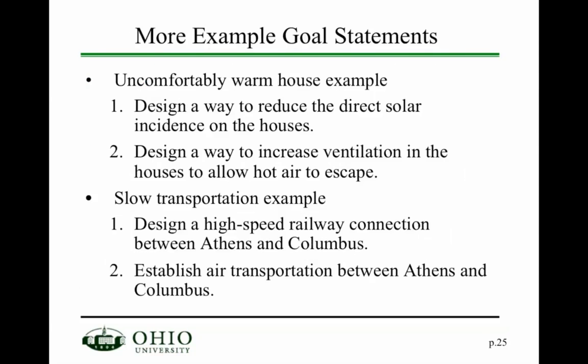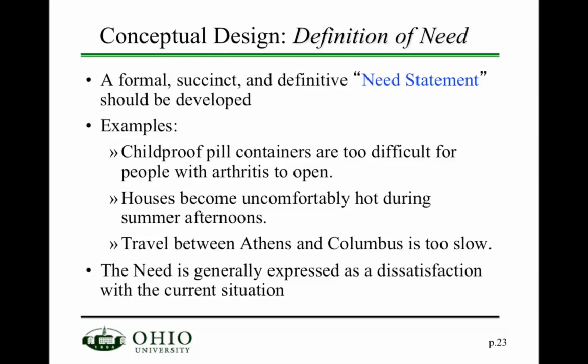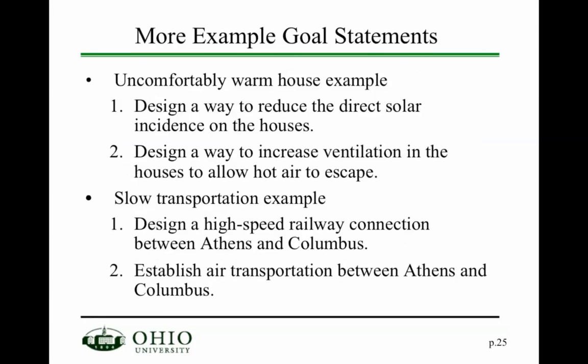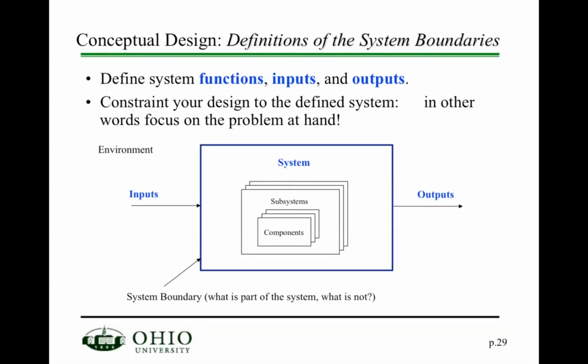That's why we often refer to these things as performance measures or measures of effectiveness. Another thing you need to define is your system boundaries and constraints.